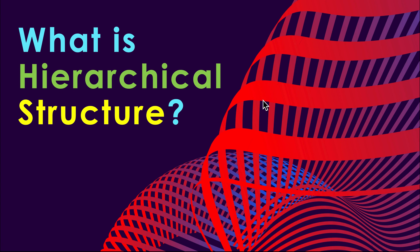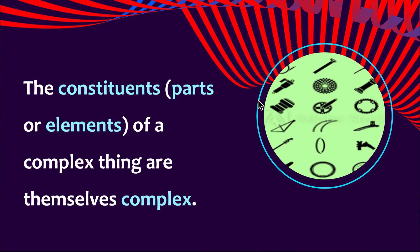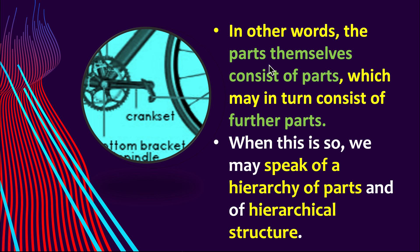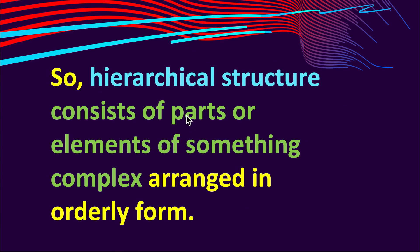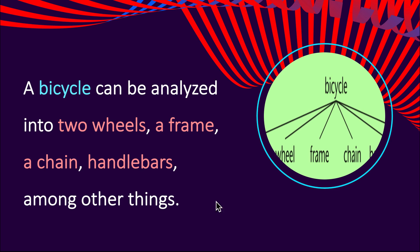Welcome to the topic: what is hierarchical structure? The constituent parts or elements of a complex thing are themselves complex. In other words, the parts themselves consist of parts, which may in turn consist of further parts. When this is so, we may speak of a hierarchy of parts and of hierarchical structure, which consists of parts or elements of something complex arranged in orderly form.